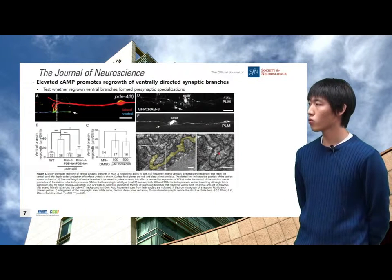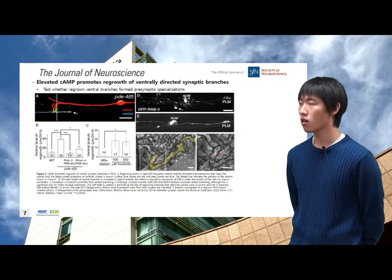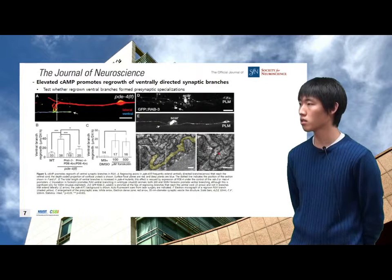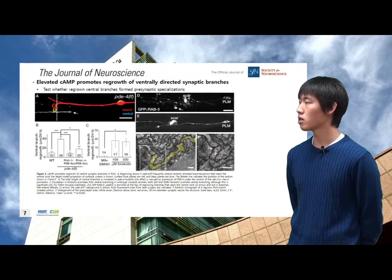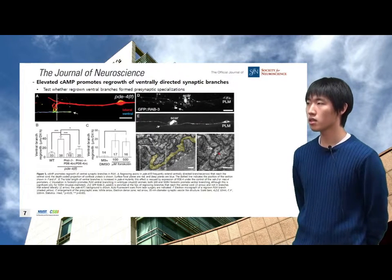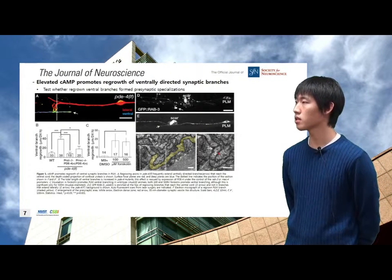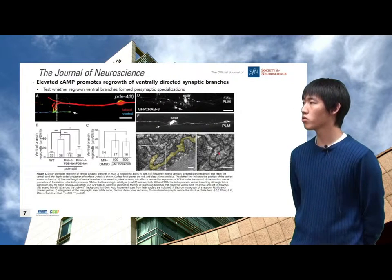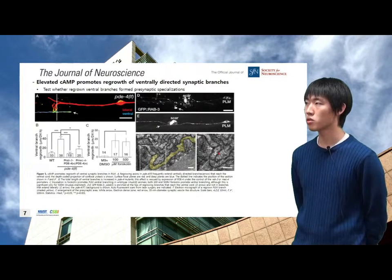They also tested whether regrown ventral branches formed presynaptic specializations. In normal development, the target neuron — the posterior touch neuron in C. elegans — extends a single ventral branch that forms synapses with interneurons in the ventral cord. They found that loss-of-function mutations in the neuronal phosphodiesterase, which are associated with elevated cAMP, promote regrowth of ventrally directed synaptic branches similar to normal development.